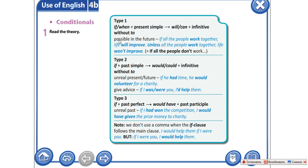Итак, ребята, первый тип условного предложения используется когда мы говорим о том, что возможно произойдет в будущем. Слово if на русский язык переводится как «если». Соответственно, if + present simple — это у нас условие. В условии мы используем present simple, а в результате мы используем вспомогательный глагол will или же модальный глагол can, might, may. И infinitive без частицы to, то есть тот же самый present simple.